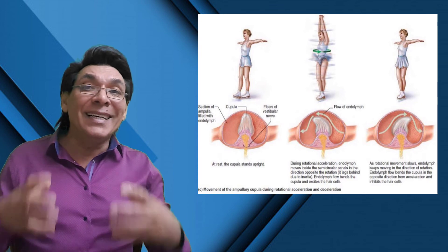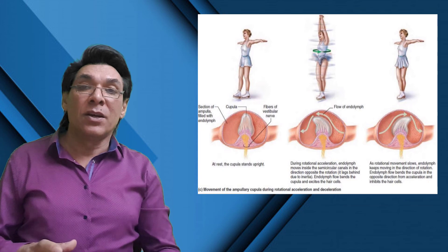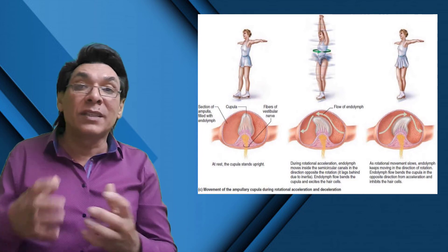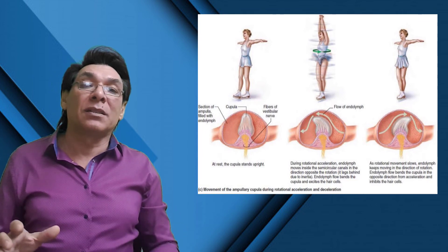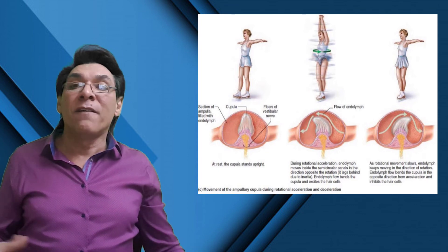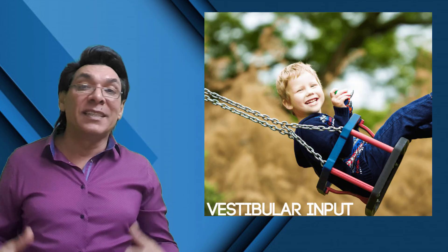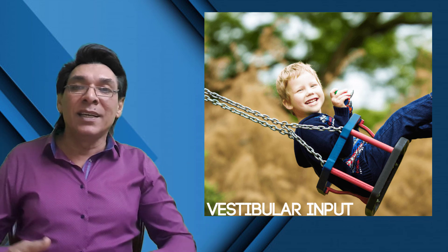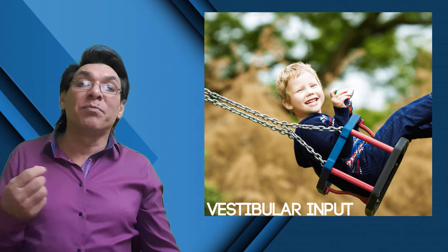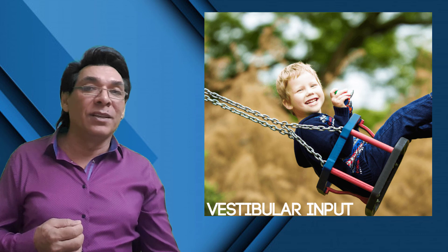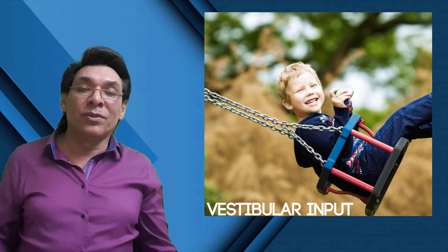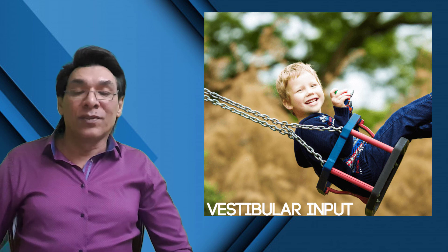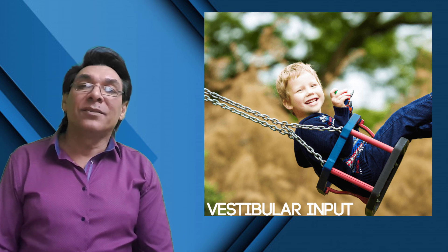Sensory receptors in the inner ear give you information about movement, gravity, and vibration to keep you upright. When you bend or rotate the head, postural adjustments occur. Quick start-and-stop movements give very intense vestibular stimulation. Vestibular input includes jumping up and down, running, swinging, and spinning. The vestibular system is the primary organizer of sensory input. That's it, dear students — good luck, see you later.